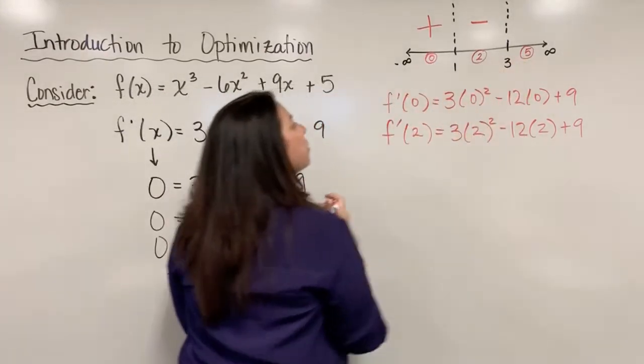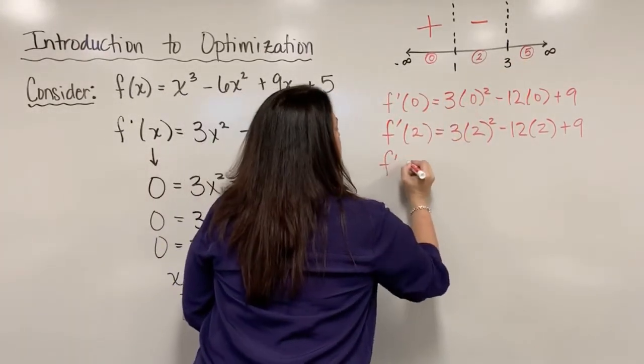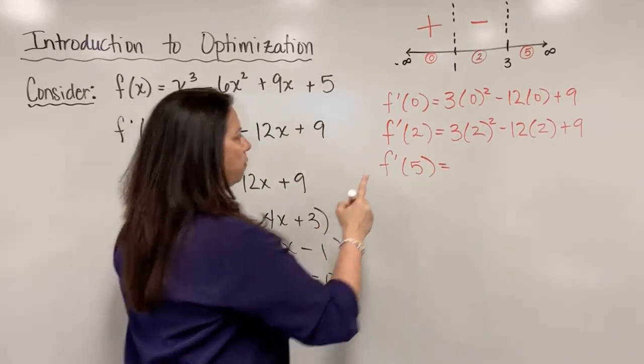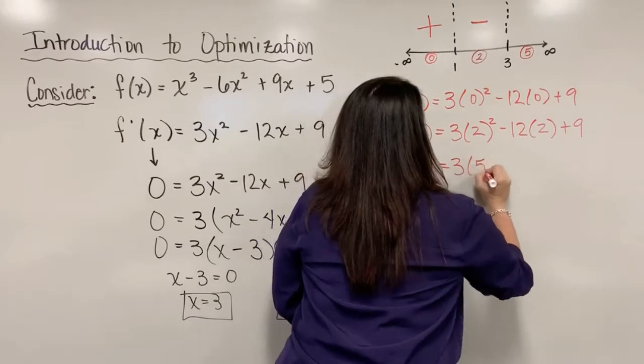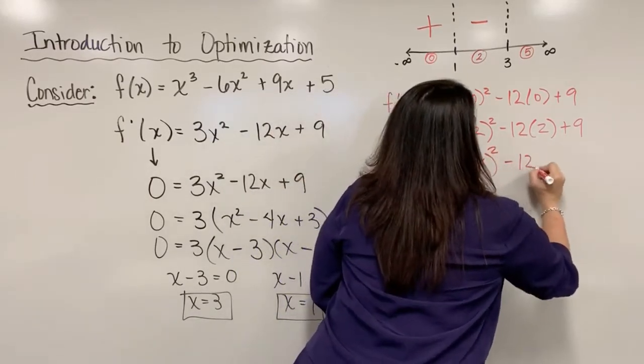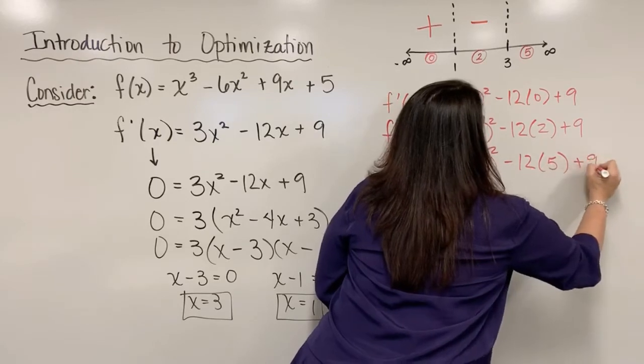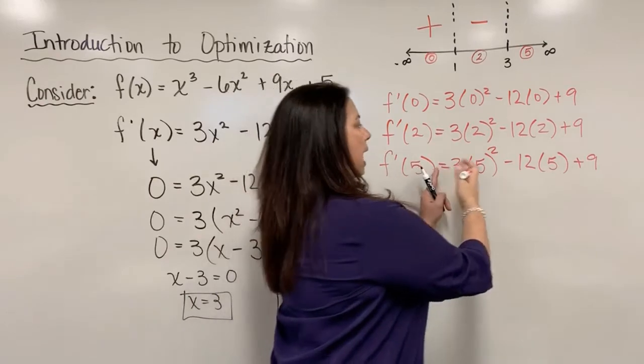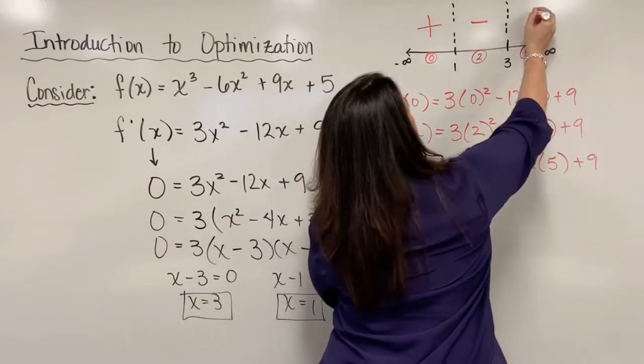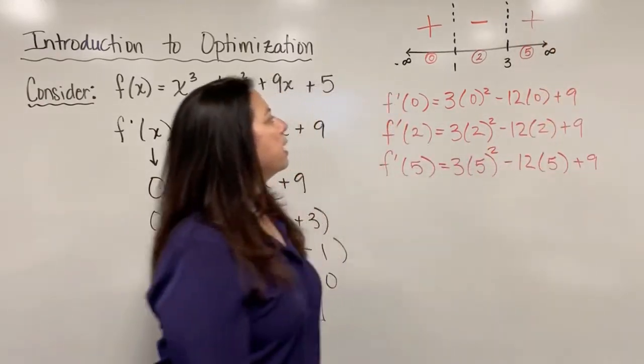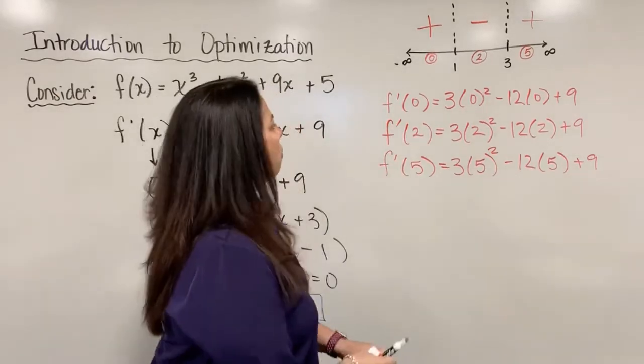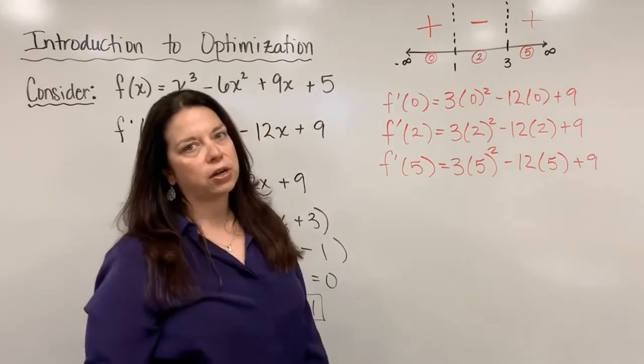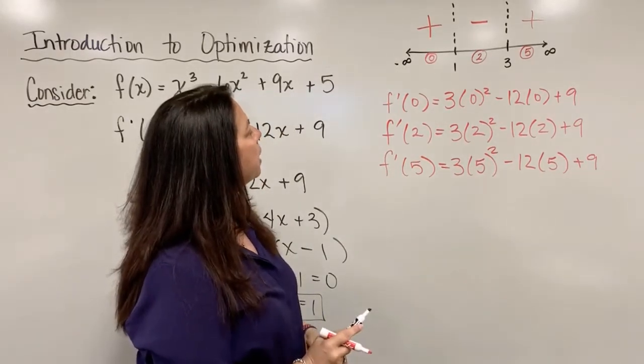And then last, we will pick the 5, and we will decide here whether it's positive or negative. When I evaluate the derivative at 5, I have 3 times 5 squared minus 12 times 5 plus 9. And again, I just need to worry about if this is positive or negative. And when I calculate this value, I should get, and in fact, I do get a positive value here. Now, this is just scratch work to confirm positive or negative in our sign chart that's displayed here.